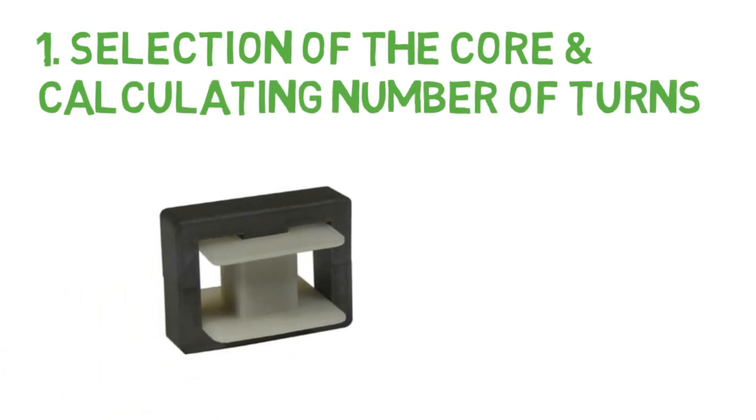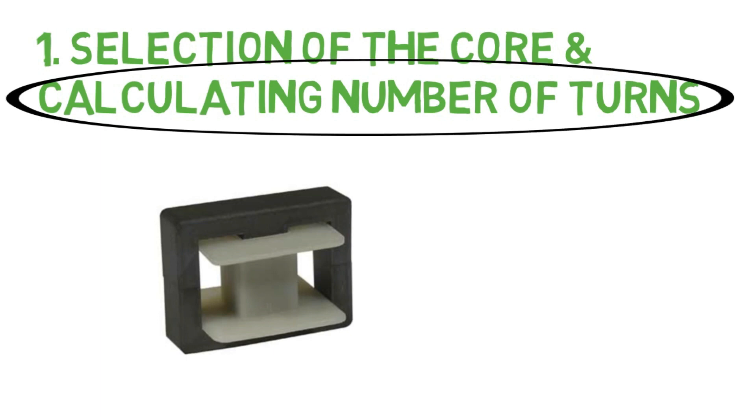We have already selected the core. Now we will calculate number of turns which are to be wound around the core by calculating primary and secondary number of turns.